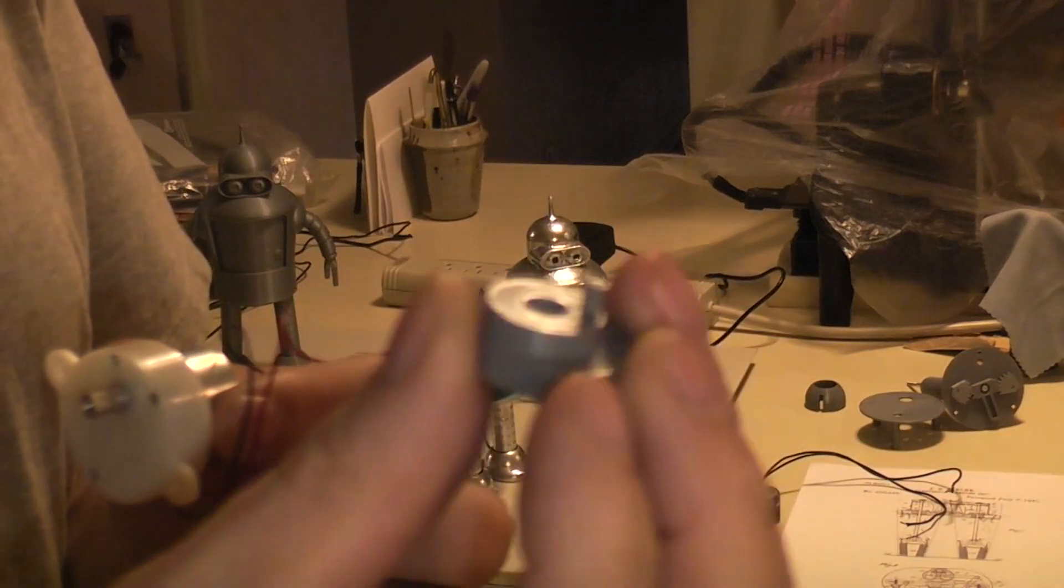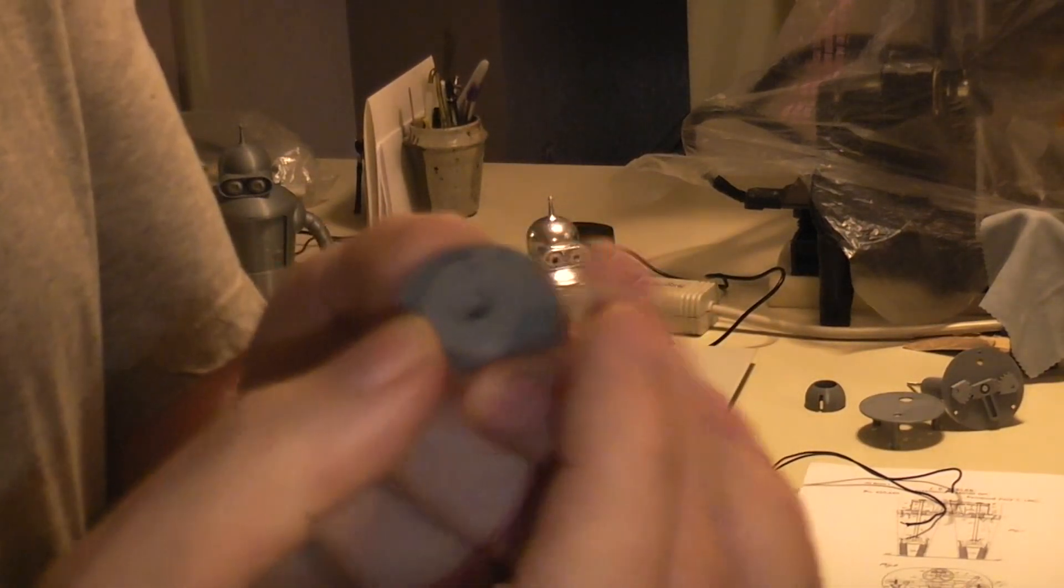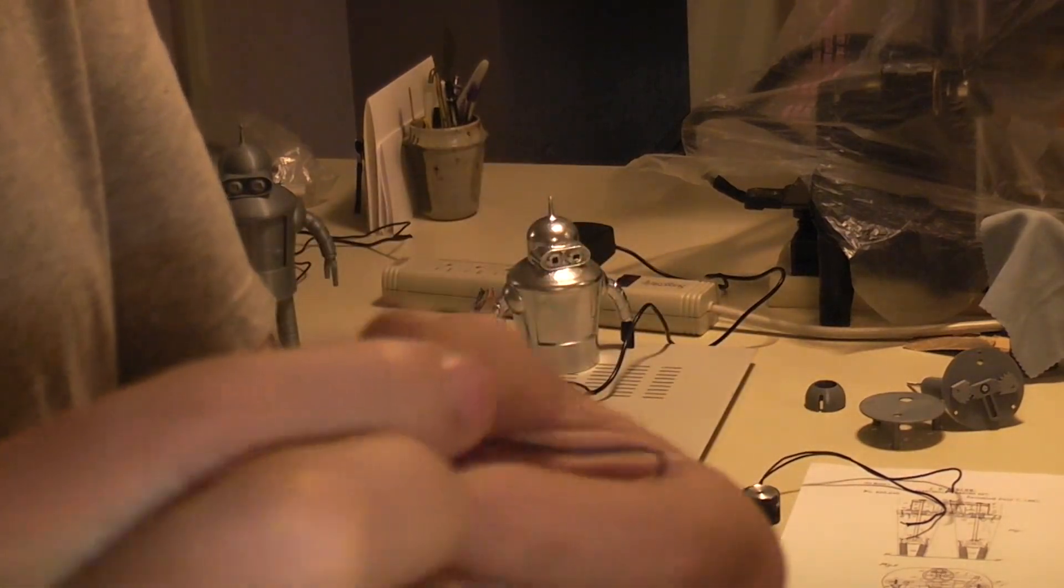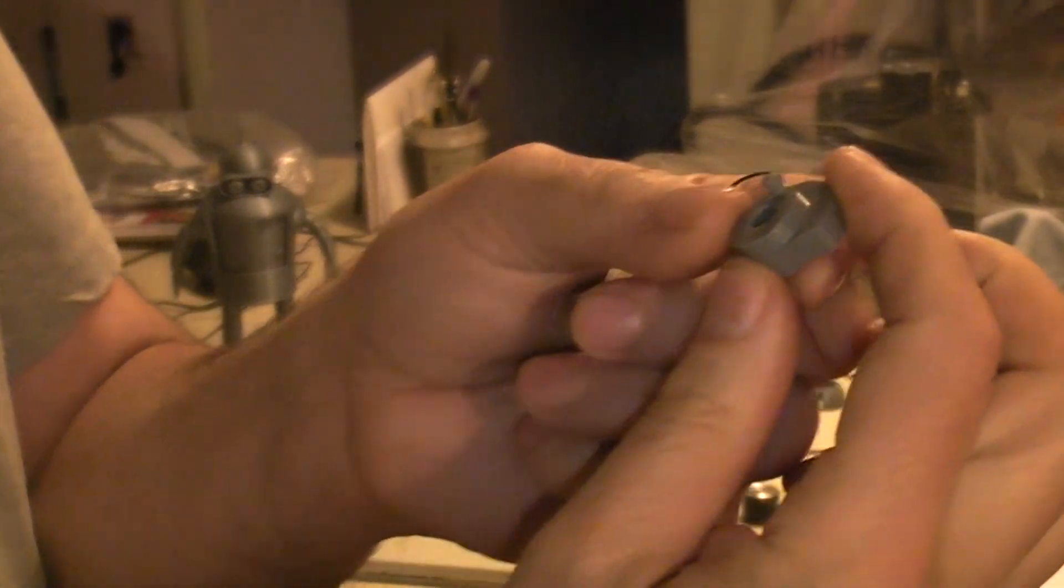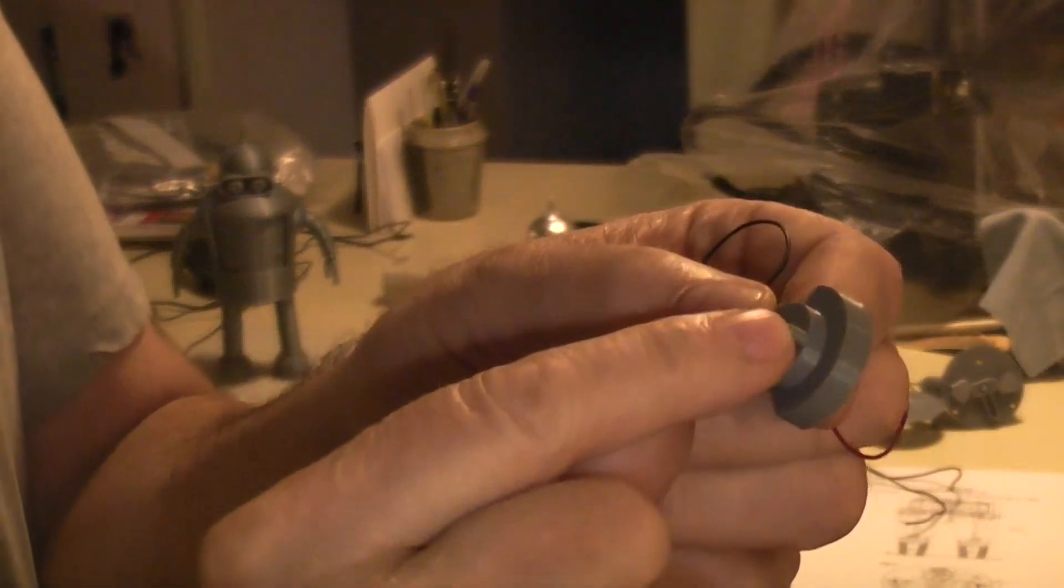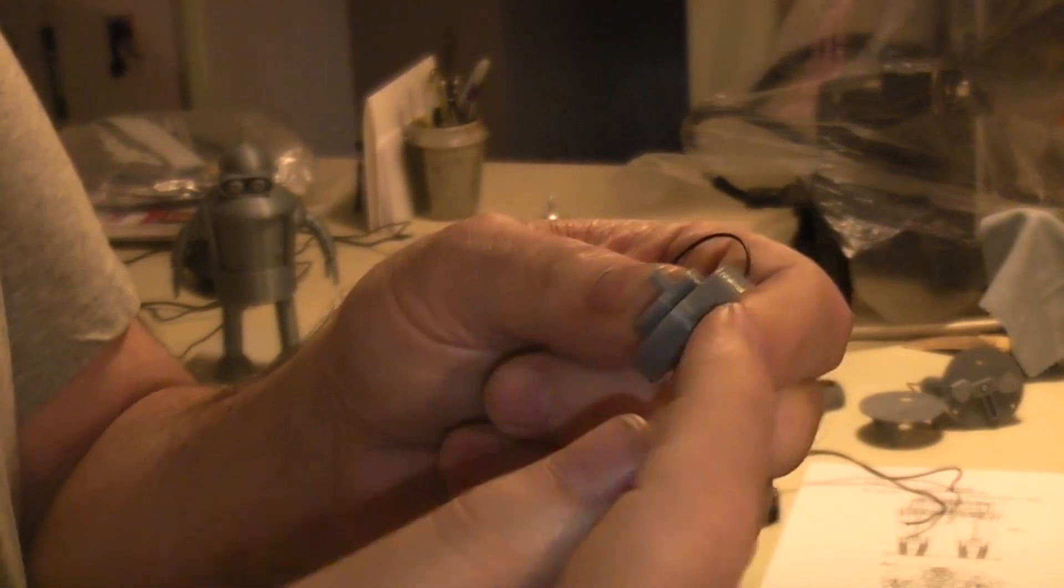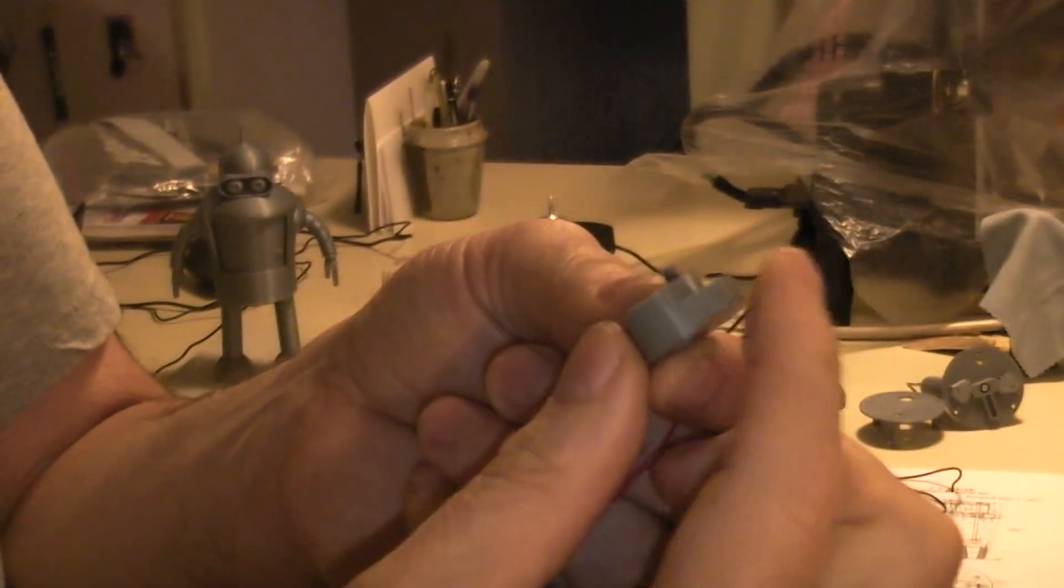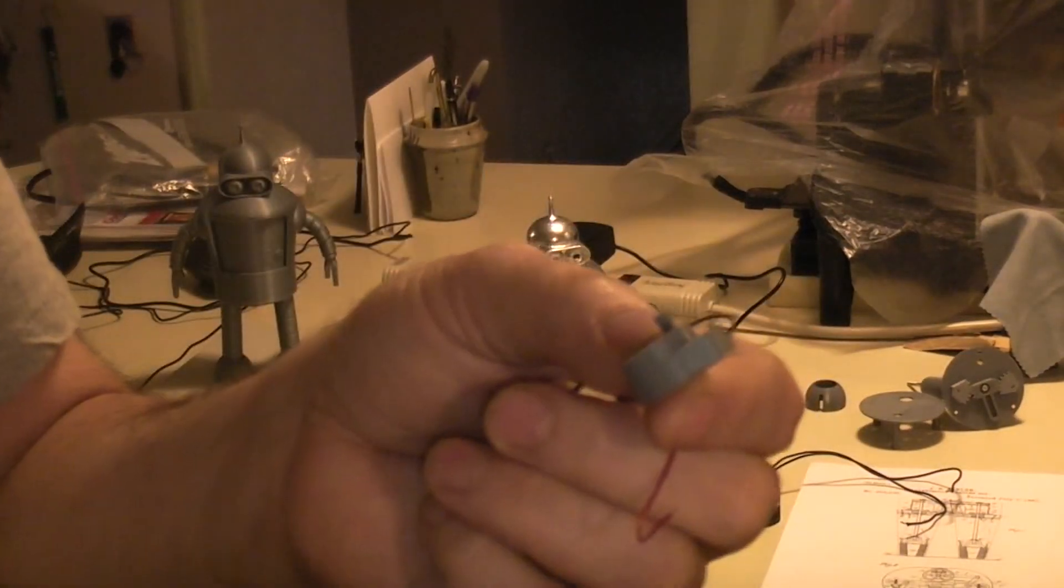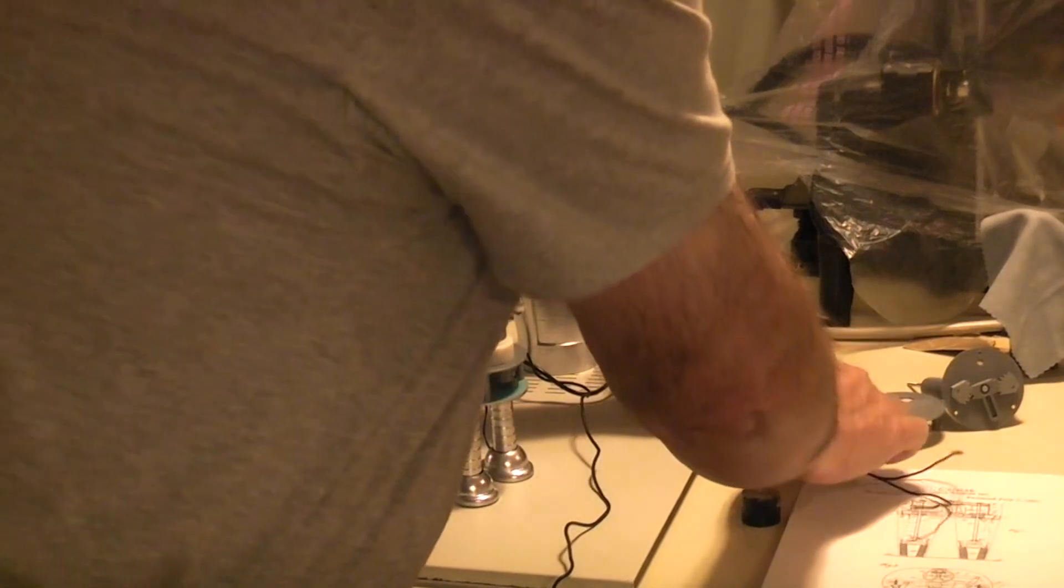This cam does two things - it has a little pin and this outside part. As this cam turns around, the pin is what's making the legs wiggle back and forth, and this outside perimeter is what's controlling the micro switch which turns one leg solenoid on and the other off, depending on which way you're going.